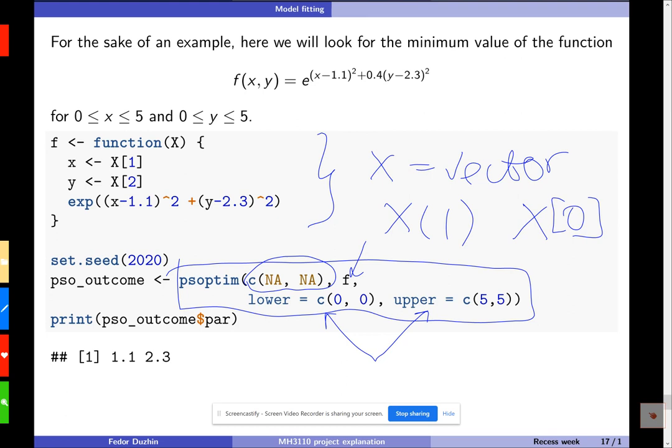they also use PSO, and so there are different implementations of PSO, and if you use a different library, then maybe instead of passing it to this vector of length two, maybe you will just write the number two here. It doesn't really matter, right? So you need to somehow tell this optimization algorithm that your problem is two-dimensional.